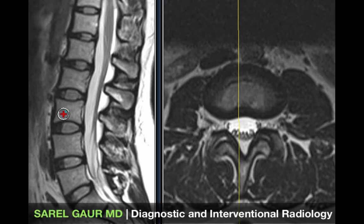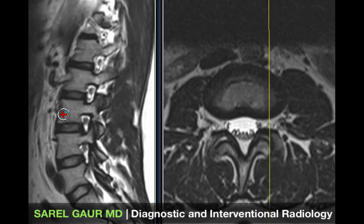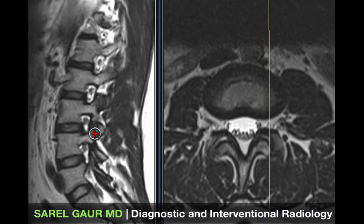As we scroll through the sagittal images and come out laterally, you can see how a portion of the vertebral body projects posteriorly — this is called the pedicle. As it comes out posteriorly it also goes superiorly and inferiorly and forms facet joints which connect between each vertebral level.